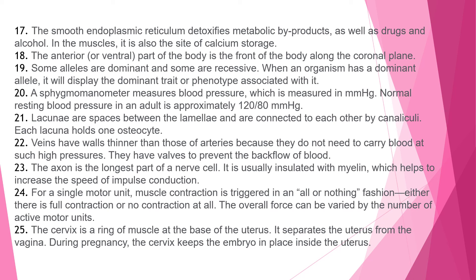Explanation 21: Lacunae are spaces between the lamellae and are connected to each other by canaliculi; each lacuna holds one osteocyte. Explanation 22: Veins have walls thinner than those of arteries because they do not need to carry blood at such high pressures; they have valves to prevent the backflow of blood. Explanation 23: The axon is the longest part of a nerve cell, usually insulated with myelin, which helps increase the speed of impulse conduction.